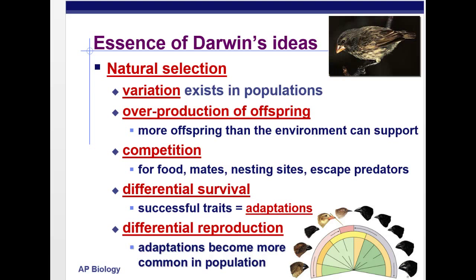I'd also like to dispel the old saying 'survival of the fittest,' because there's a lot wrong with how people think about that. Sometimes when we think of fitness we think the biggest and the strongest, when in fact sometimes being the biggest could get you killed. In terms of evolution, fitness is about the types of adaptations you have, and it's measured by how many offspring you're able to leave behind — that you actually survive to reproduce in that environment.